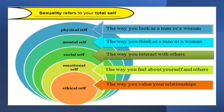Human sexuality is part of your overall personality, which affects your total self. Sexuality is an integral part of what we do and who we are. It is the total expression of an individual's sexual concepts, such as physical self — or the way you look as a man or woman; mental self — or the way you think; social self — or the way you interact with others; emotional self — or the way you feel about yourself and others; and ethical self — or the way you value relationships.